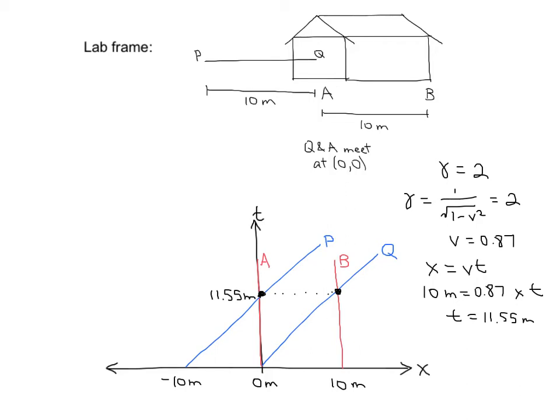And P should hit 0 meters at 11.55 meters in time. Therefore, in the lab frame, P and A coincide at the same time that B and Q coincide. So the farmer believes that the pole fits inside the barn.